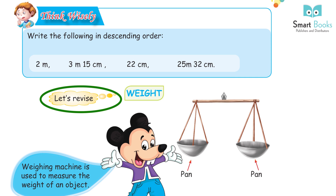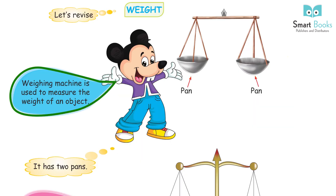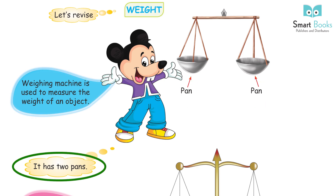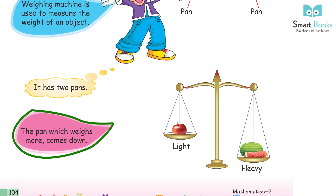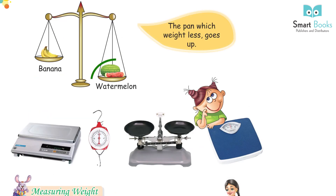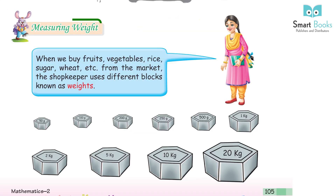Let's revise Weight. A weighing machine is used to measure the weight of objects. It has two pans. The pan which weighs more comes down (heavy), and the pan which weighs less goes up (light). For example: banana vs. watermelon.